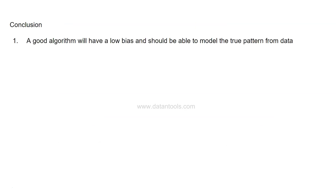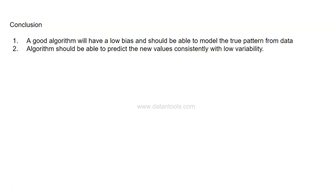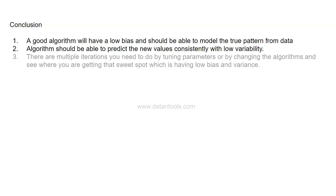So what is the conclusion? A good algorithm will have low bias and should be able to model the true pattern from data. The algorithm should also be able to predict new values consistently with low variability — that means low variance. Your algorithm should have both low bias and low variance. There may be multiple iterations needed by tuning parameters or changing algorithms, and you need to find the sweet spot of low bias and low variance.